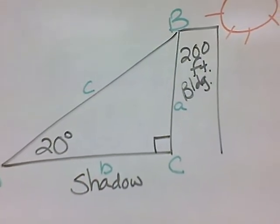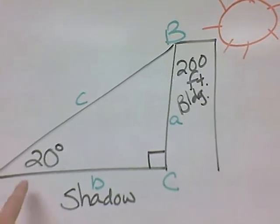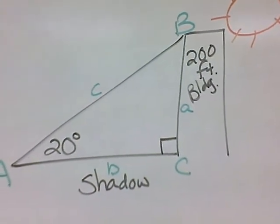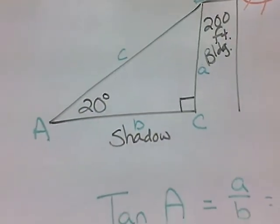So we start to look at our trig functions, and if we have an angle and then the opposite and adjacent sides are what we're using, then that means that we want to use tangent.